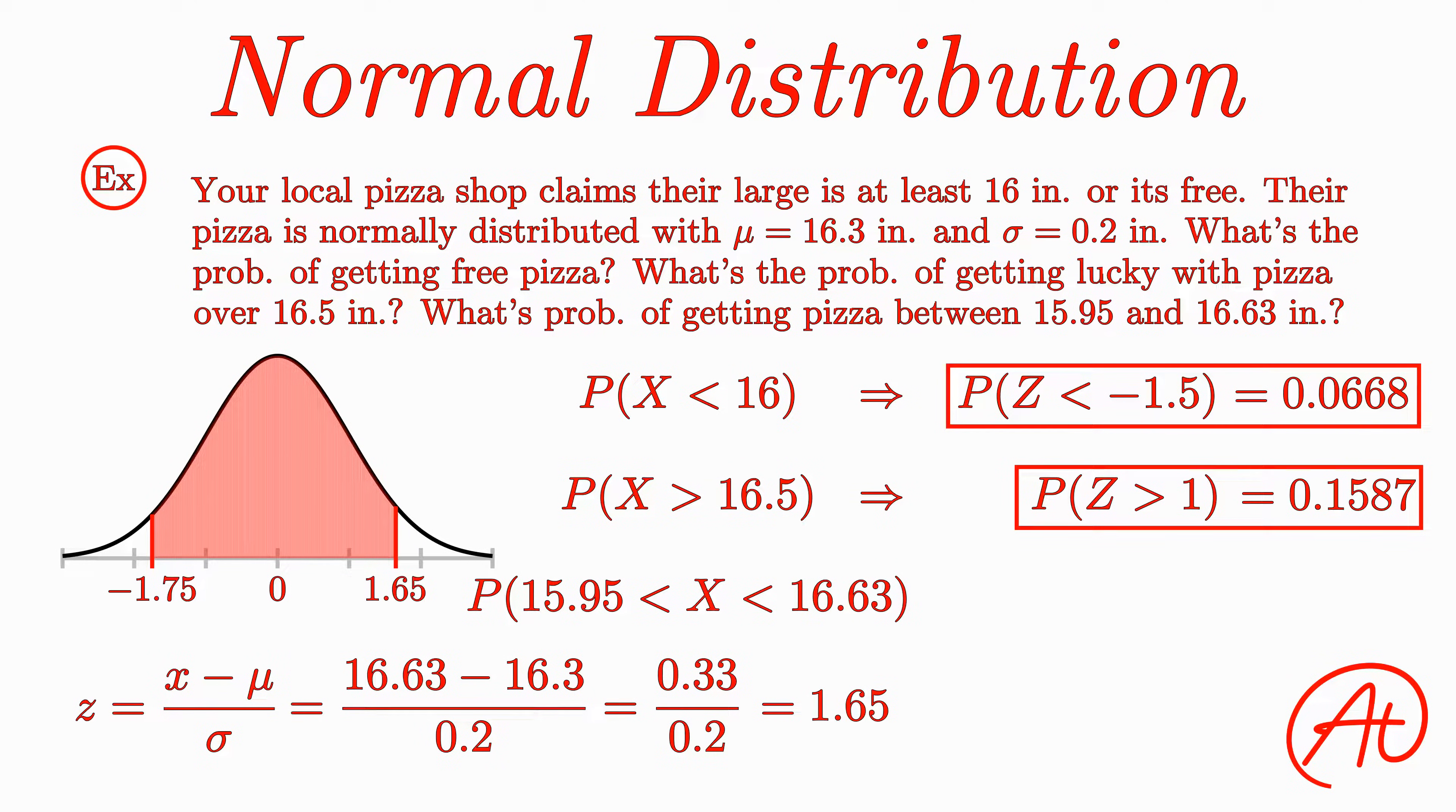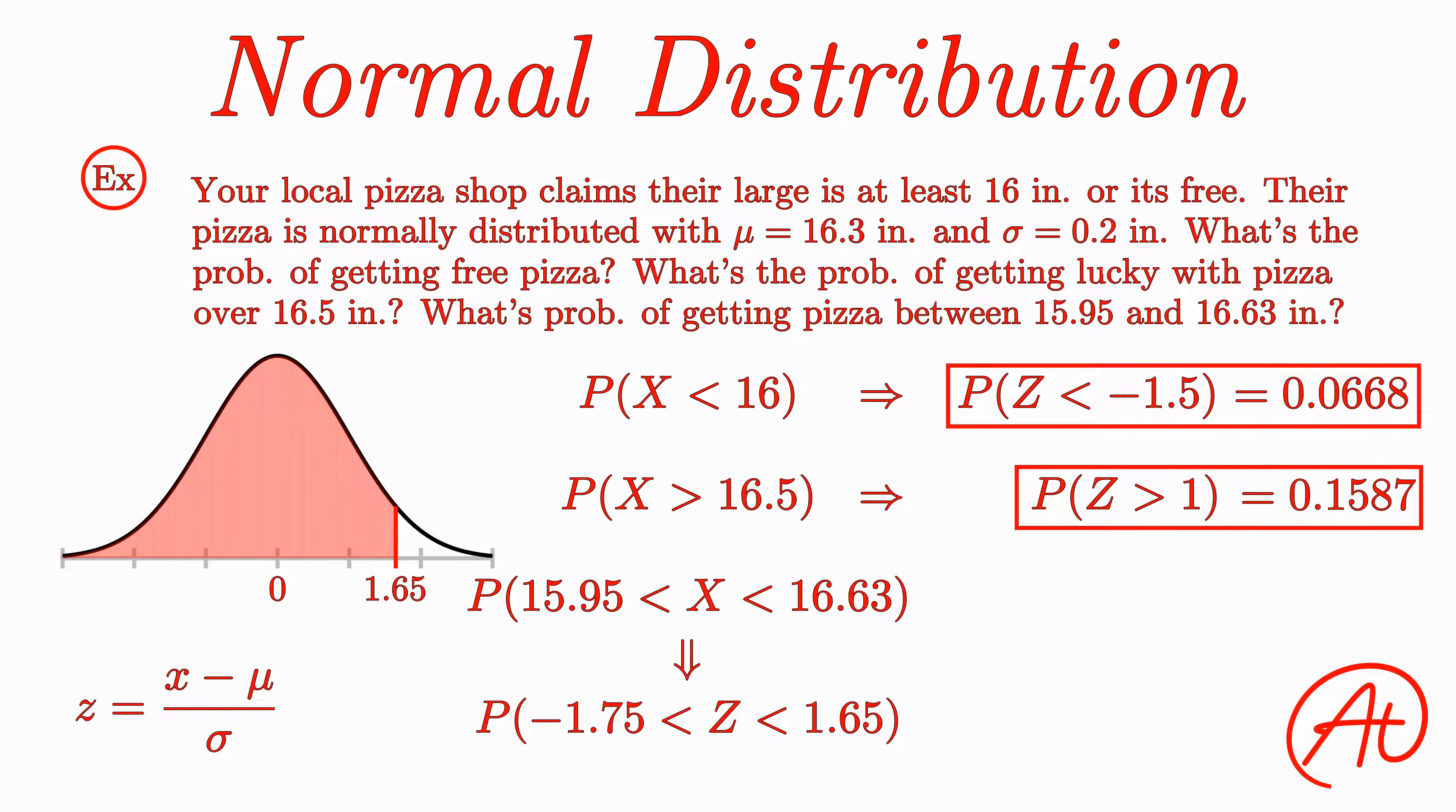Alright, we have our z-scores now, but how do we use them to find the area between them? Well, one way to do it would be first look in the chart for the larger z-score. This would get you this area here, to the left of 1.65. Then you can find the area to the left of the smaller z-score, which would get you this area in the tail here. Once you have those, you can subtract the smaller area from the larger area to leave you with the area in between them.